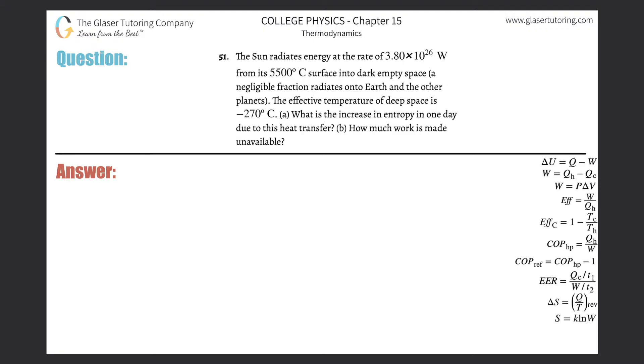Number 51. The sun radiates energy at the rate of 3.8 times 10 to the 26 watts from its 5,500 degrees Celsius surface into dark empty space. The effective temperature of deep space is negative 270 degrees Celsius. What is the increase in entropy in one day due to this heat transfer?